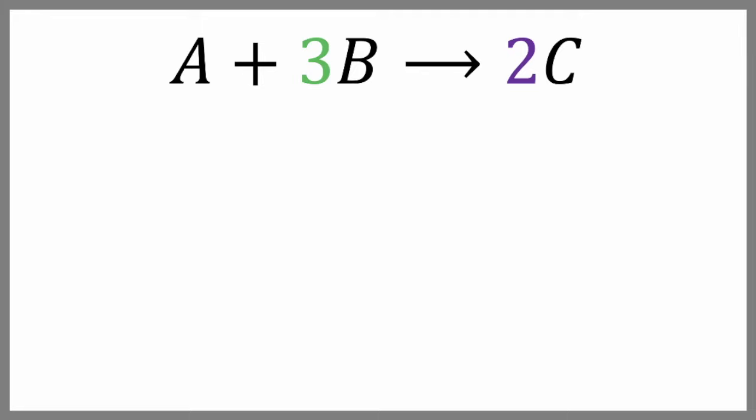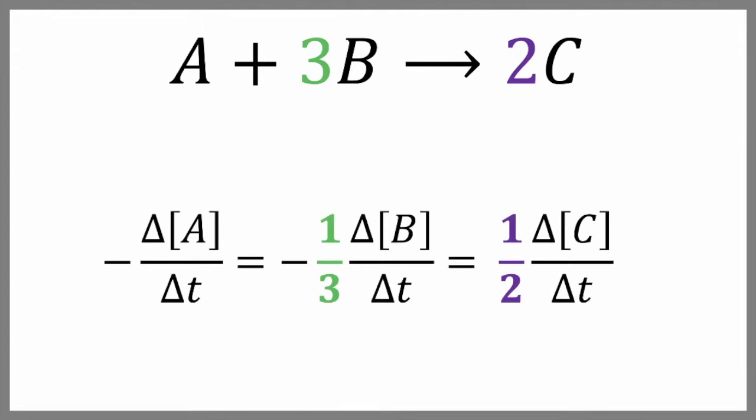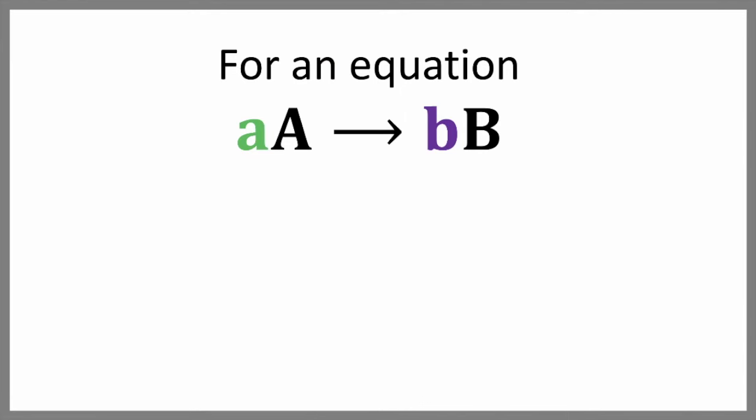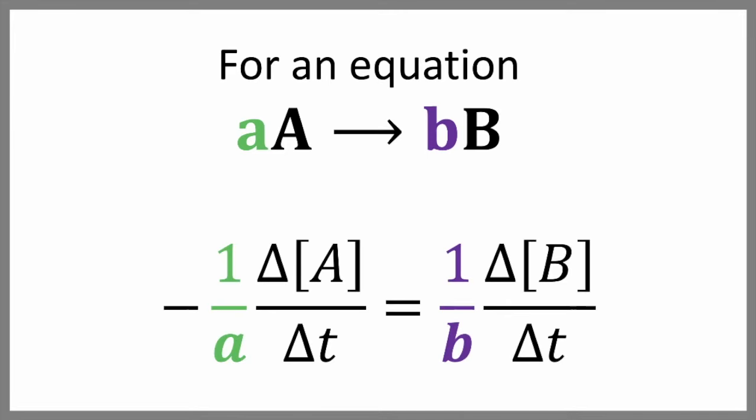To relate these to each other, we can divide each change in concentration for a species by its coefficient. Or more generally, for an equation where the coefficients are little a and little b and our species are big A and big B, we can relate the rates to each other like this.